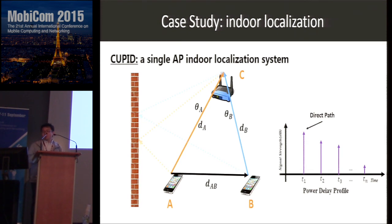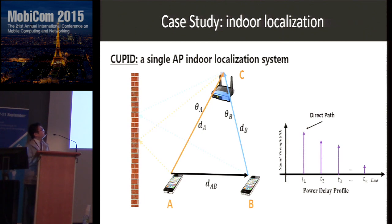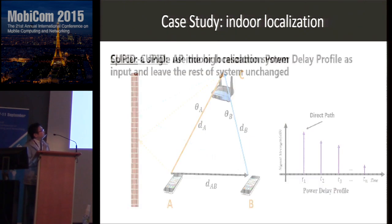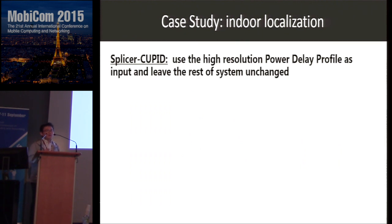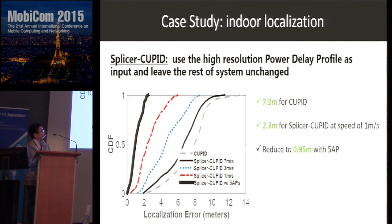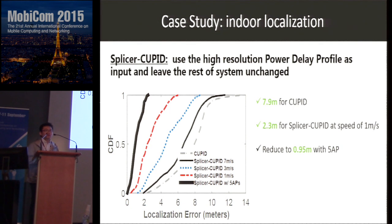We also conduct a case study using indoor localization as an end-to-end example. We integrate Splicer with QPIT, a single-AP indoor localization system that uses power delay profile for distance estimation and MUSIC for angle-of-arrival estimation. We replace QPIT's input with our high-resolution power delay profile and leave the rest unchanged. Results show that QPIT's original localization error is more than 7 meters; with Splicer it reduces to 2 meters; and with multiple access points it further reduces to less than 1 meter.